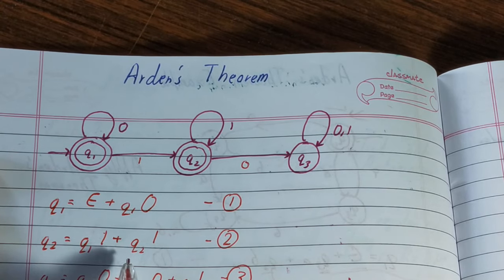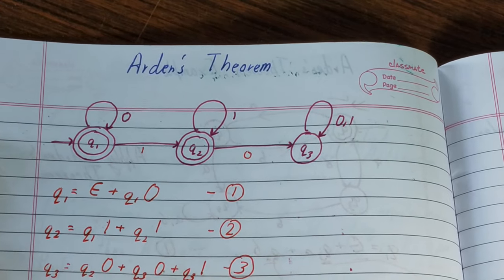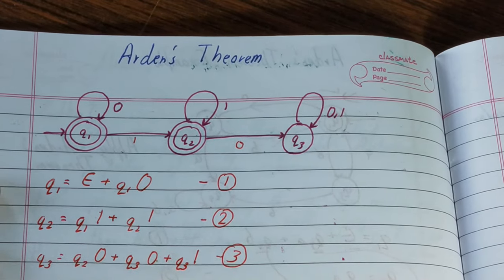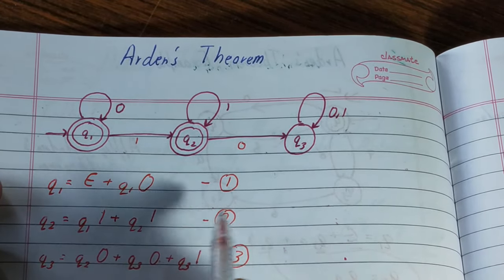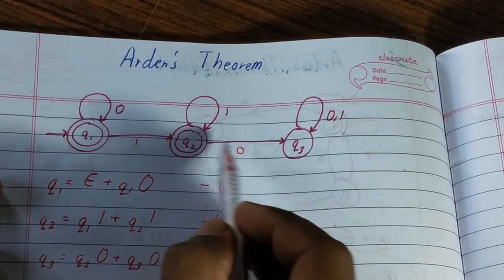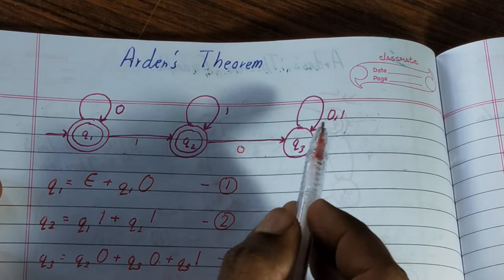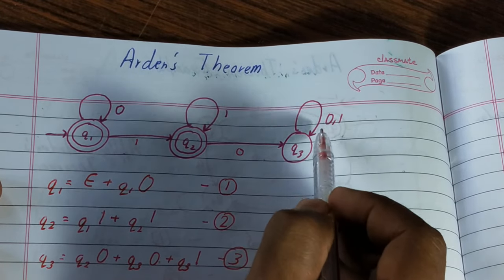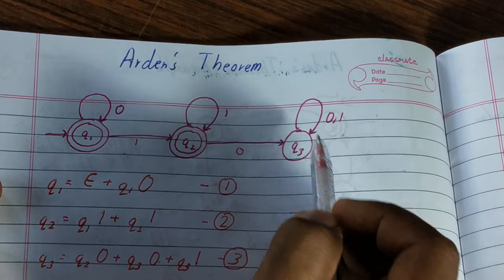For q2 the incoming edges give us q2 = q1·1 + q2·1. The same thing we'll do for q3 as well: q3 = q2·0 + q3·0 + q3·1.